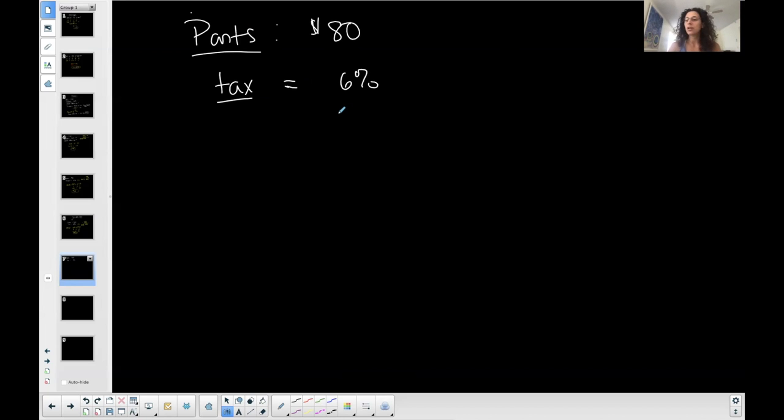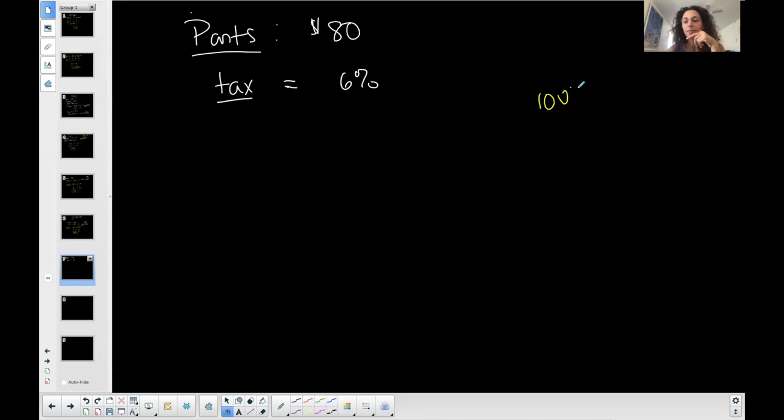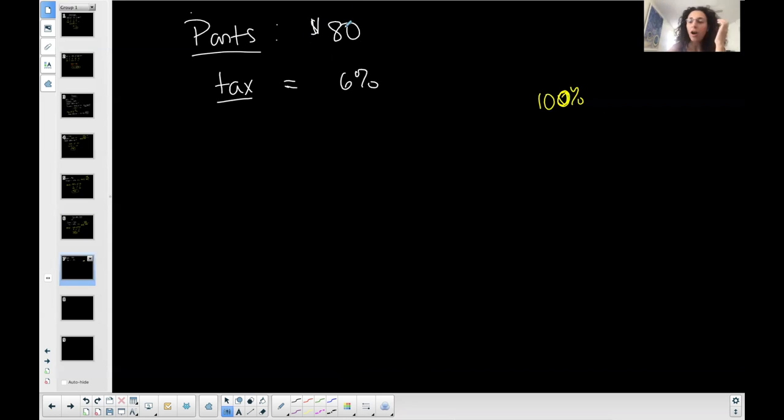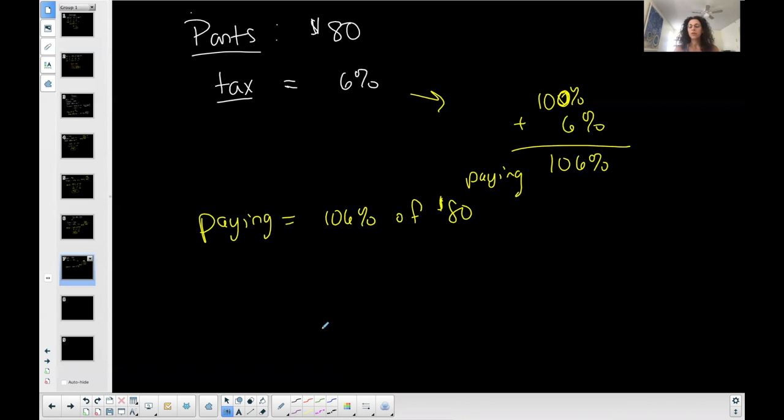So if I were paying 100%, right, of this, I would be paying the $80. But because I'm being taxed, I'm adding 6% to the original 100% that I would be paying. So I'm actually paying 106%. So the amount that I'm paying is 106% of the original $80. Why is it greater than 100%? Because I'm taking the 100%, I'm adding tax to it. I'm adding more than that. So what did I say before? I said that if I have a percentage that is greater than 100%, when it is converted into a decimal, it should be a decimal greater than one. 106% is 1.06 in decimal form. Move the digit two places to the left.